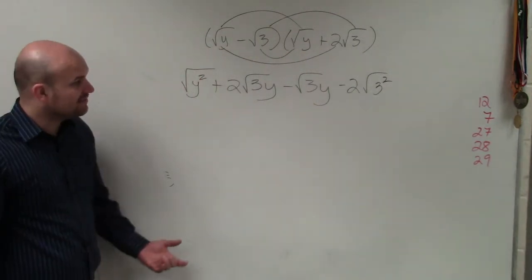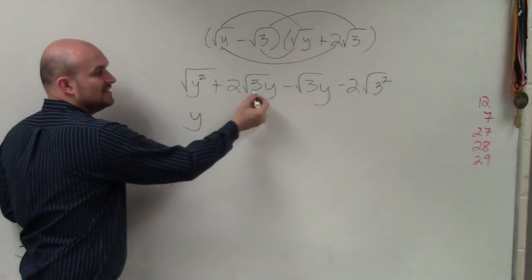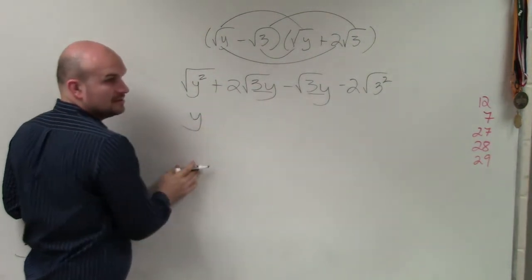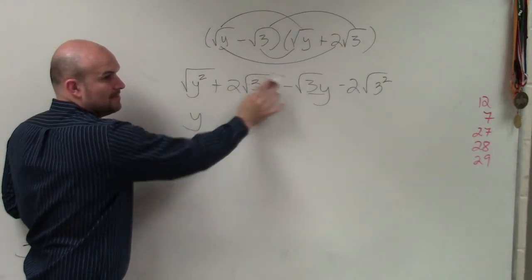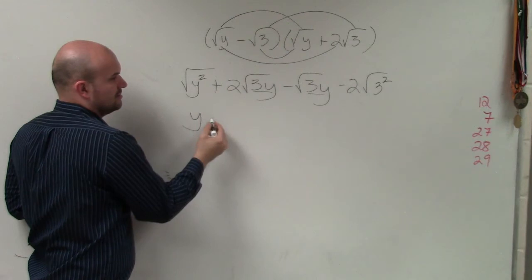Now, we go ahead and simplify. The square root of y squared is just going to be y. Are these the same radicands? Is the index the same? So you subtract them. It's basically 2 minus 1, which is just 1.